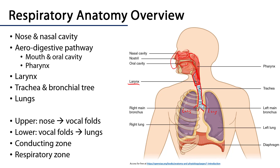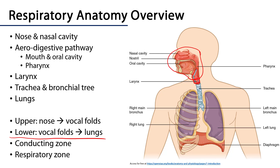There are a couple of ways in which we can divide the respiratory system to conceptualize it. The first is anatomically. We can divide the respiratory system into the upper and the lower respiratory system. The upper respiratory system consists of all of the conductive pathways down to the vocal folds of the larynx. The vocal folds sit between the arytenoid cartilage and the thyroid cartilage. Everything proximal to the vocal folds is the upper portion of the respiratory system, and everything distal to the vocal folds is the lower portion.